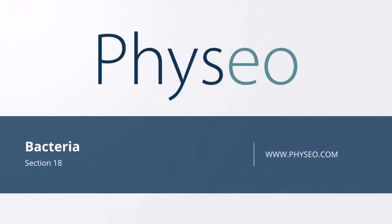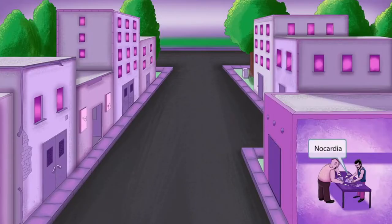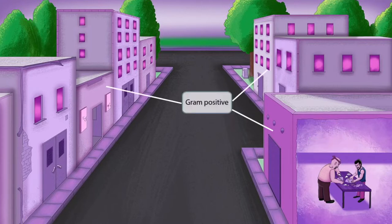Welcome to section 18 of Bacteria. This is our Bacteria overview figure, and in this video we'll be discussing Nocardia asteroides, which you can see right here. This scene takes place in an urban environment with these two terrorists making nocard bioweapons. Nocard sounds like nocardia, so it will be our symbol for nocardia.